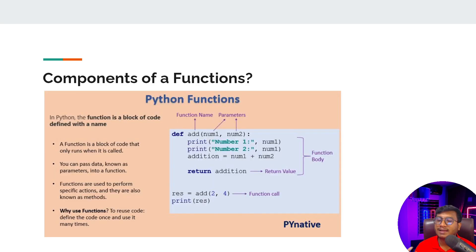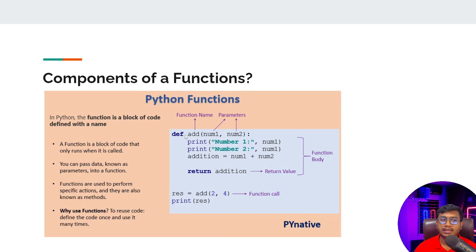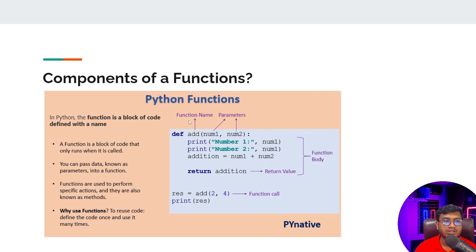Now let's look at the components of a function. After some time I'll show you a practical implementation. First, I'm giving you an overview of why we use functions and why they are so important. When you want to define a function, first you use the keyword `def` — which stands for definition. You are defining a function. The second thing is the function name — just like we saw print, len, max, min. Since this is a user-defined function, you can give it any name.